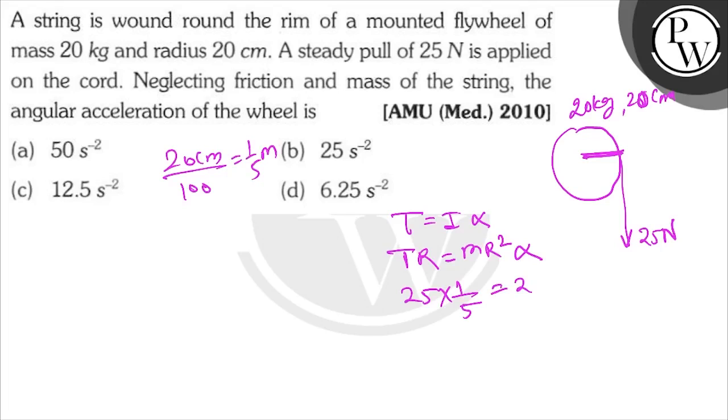This equals 20 kg times R, which is 1 by 5 squared, into alpha.